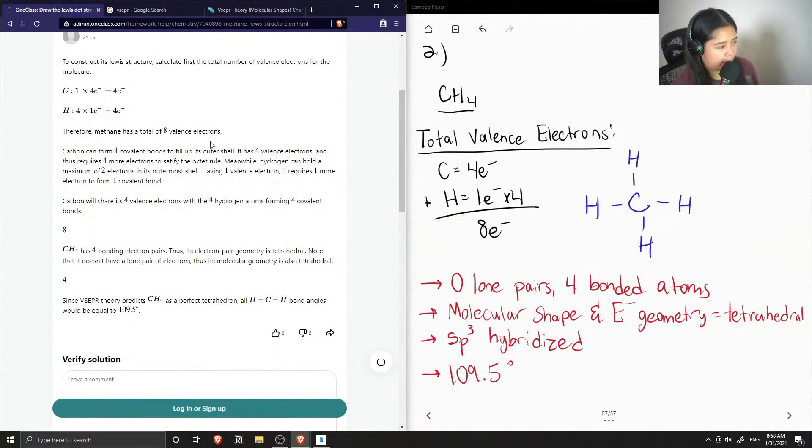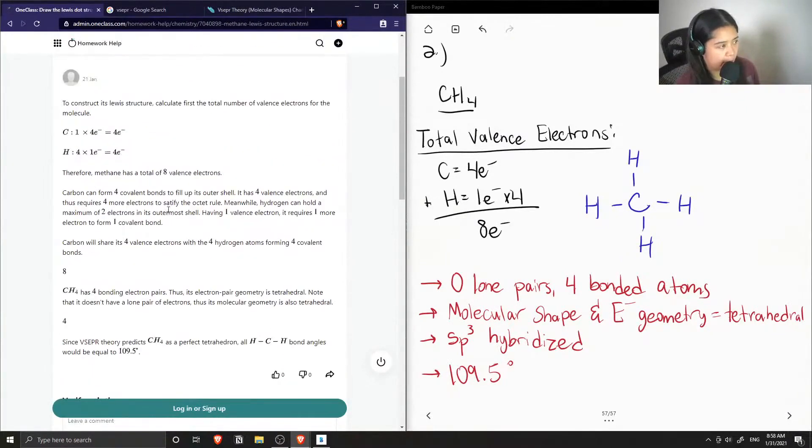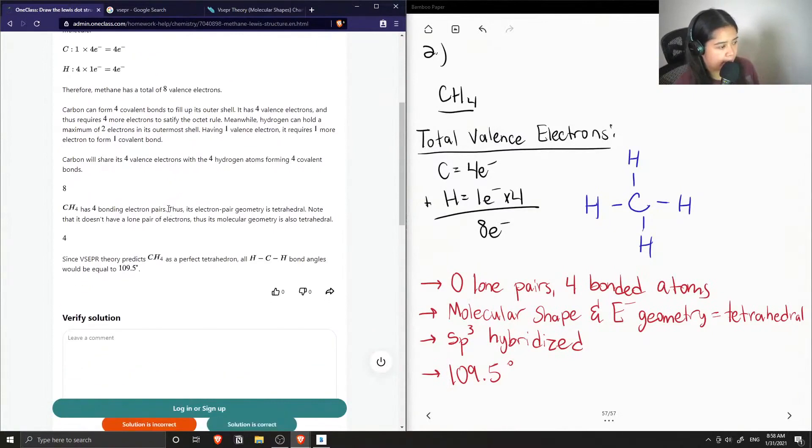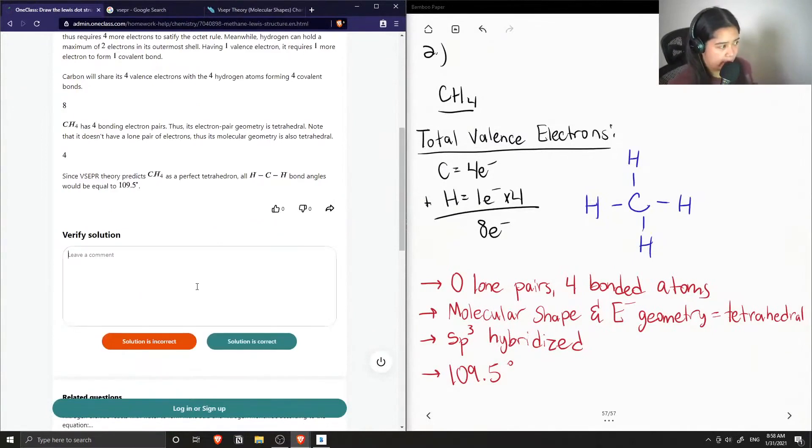The picture isn't showing, but it sounds like they got the correct answer: tetrahedral electron pair geometry and bond angles of 109.5 degrees.